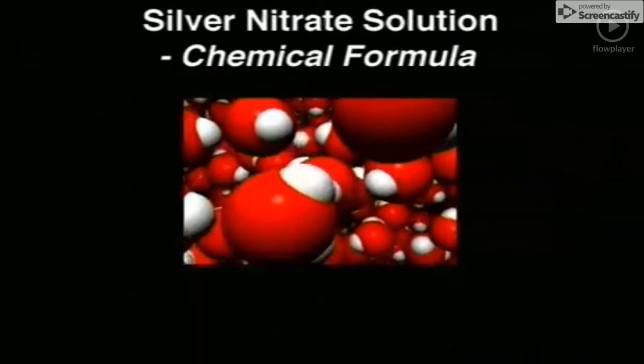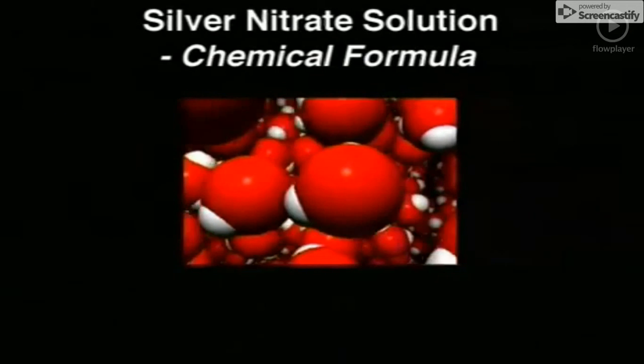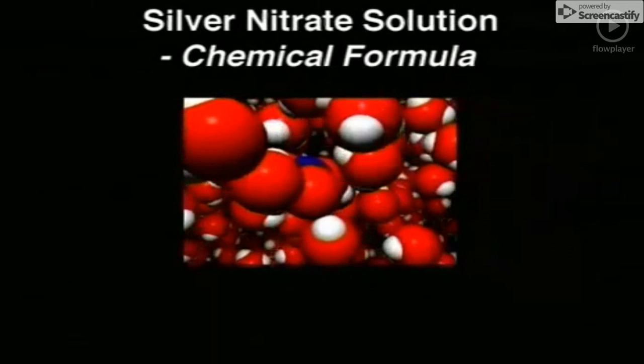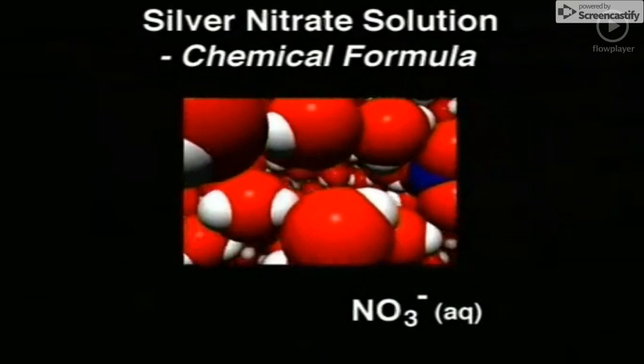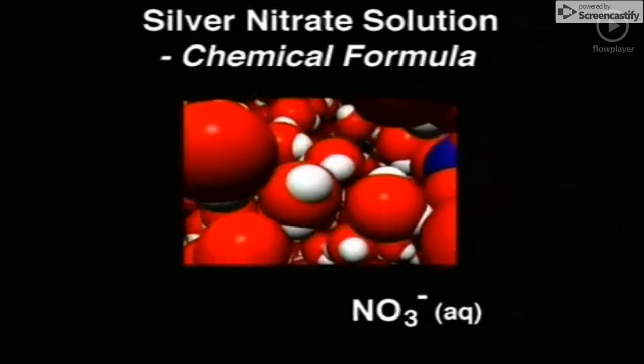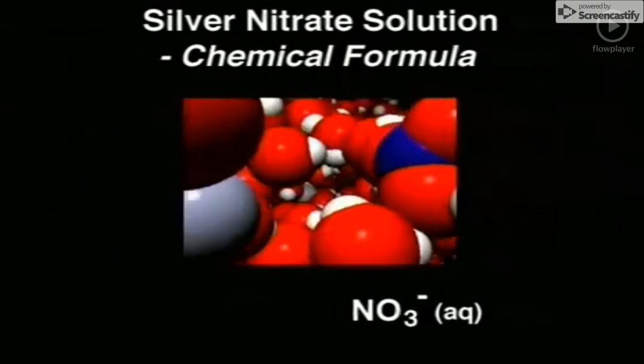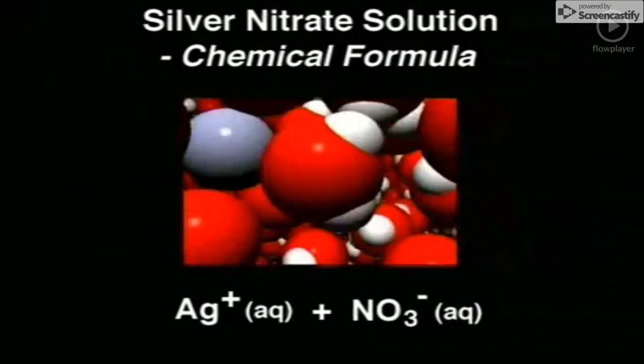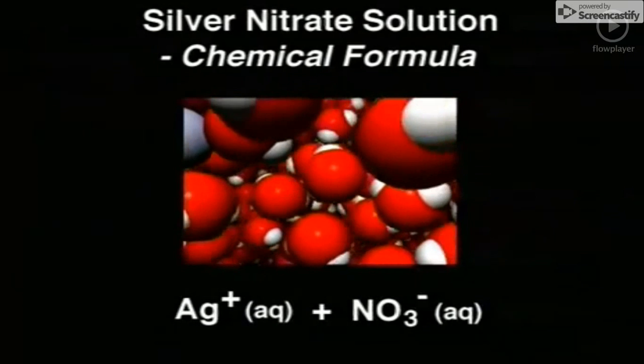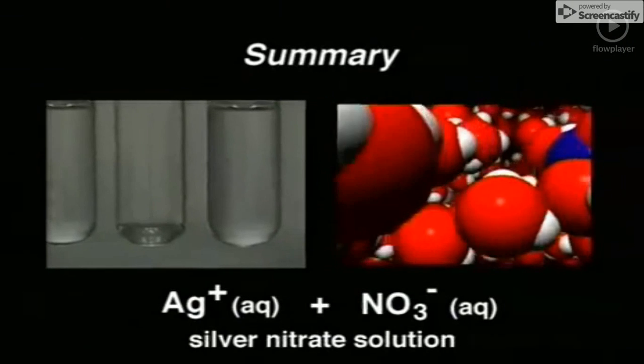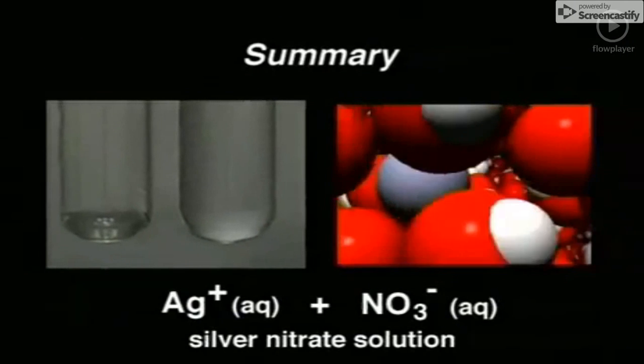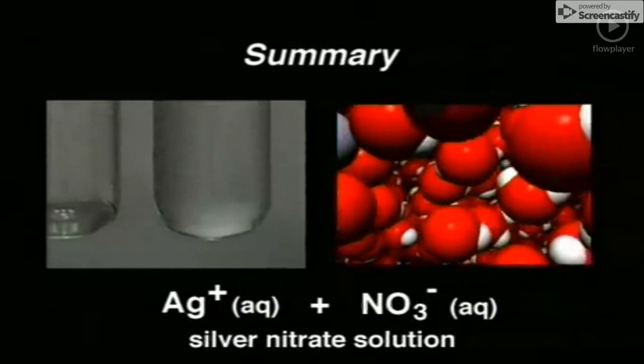A one molar silver nitrate solution contains about 55 water molecules for each silver ion and nitrate ion. The ions are separated from each other by, on average, about three water molecules. Silver nitrate solution contains billions of hydrated silver and nitrate ions moving around amongst the water molecules.